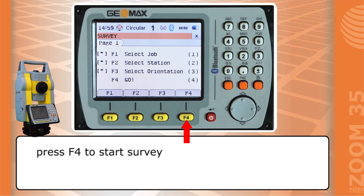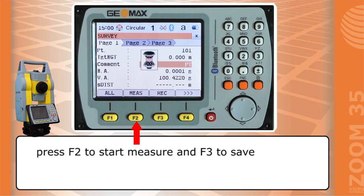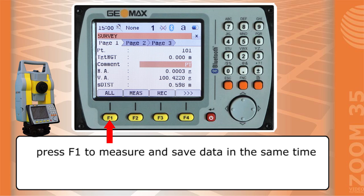Press F4 to start survey. We can choose hit point and height target, insert a comment and view the measurement result. Press F2 to start measure and F3 to save. Press F1 to measure and save data in the same time.